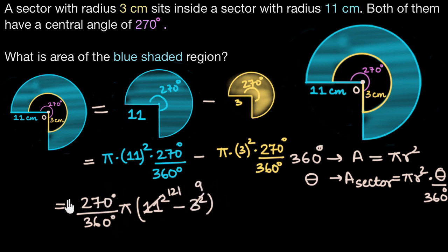So let's simplify this. Here I can divide the numerator and denominator by 10 and then here 27 and 36 both are divisible by 9, so 9 times 3 is 27, 9 times 4 is 36 and 121 minus 9 would be 120 minus 8 which is 112, so this is equal to 3 by 4 π times 112.